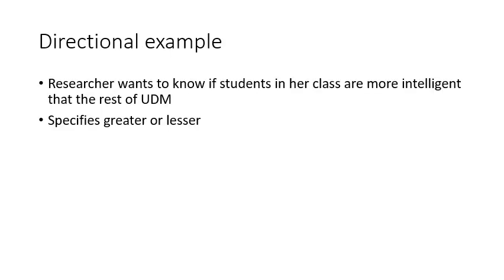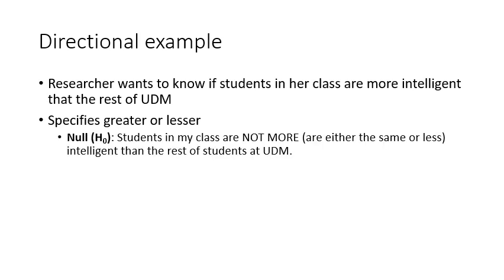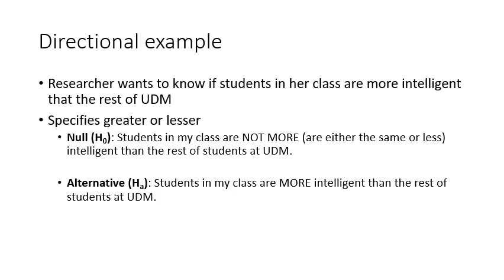Let's look at a directional example. A researcher wants to know if students in their class are more intelligent than the rest of the university. This is directional because they want to know if they're more intelligent, so it's greater than. The alternate hypothesis is that the students in the class are more intelligent than the rest of the students — the alternate is what the researcher is looking for. Then the null hypothesis is the opposite: that the students in the class are not more intelligent than the rest of the students at UDM.